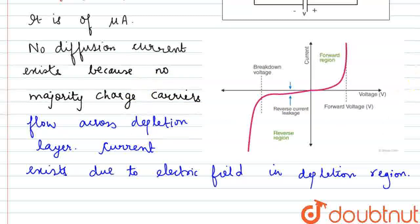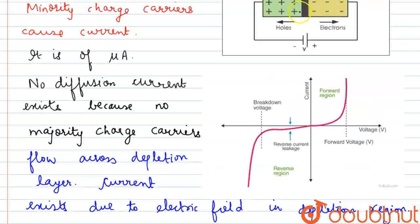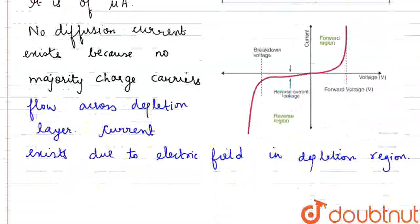The reason is the same because there is no flow of majority carriers. Whatever external voltage we apply, there will be no flow of majority carriers. The current that exists is due to the electric field.